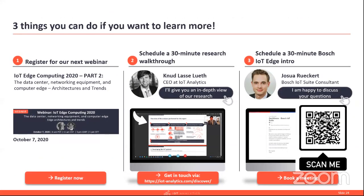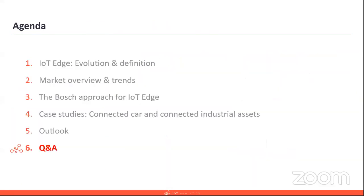If you want to learn more, there are three things. First, we have another edge computing webinar in two weeks that talks more about the thicker edge — we're pasting the link into the chat right now. From IoT Analytics, if you're interested in the research we presented, I'm happy to do a 30-minute walkthrough session with you. There's a link in the chat: iotanalytics.com/discover. You can send us a message and we'll get back to you. And the same for Bosch — you can scan the QR code or book a meeting using the link just posted into the chat to meet with Joshua. With that, let's get to Q&A.